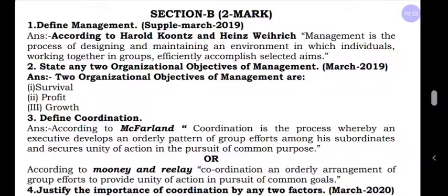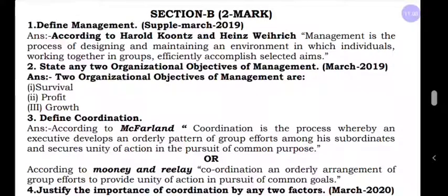When they ask to define, you should not write the meaning of management — you should write a definition, which means there must be an author's name and what that author said. The famous definition is given by Harold Koontz and Heinz Weihrich. They said: management is the process of designing and maintaining an environment in which individuals work together in groups to efficiently accomplish selected aims. Management is a process using five functions — planning, organizing, staffing, directing, controlling — to design and maintain the environment, working in groups to achieve selected aims.